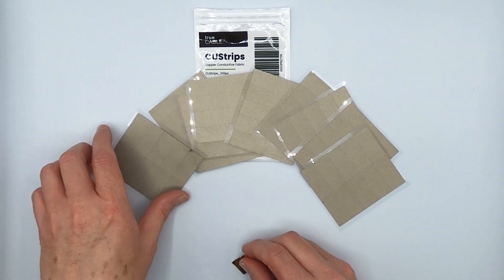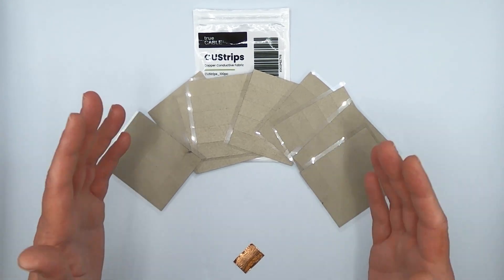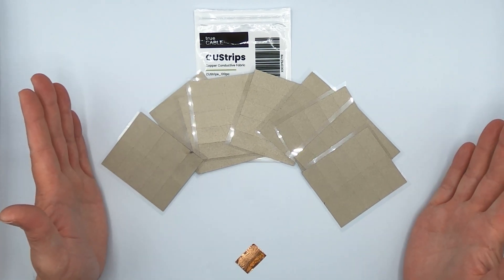And these strips are useful for bonding your cable shield to your termination hardware, whether that be a patch panel or a plug or a keystone jack.